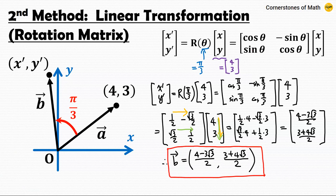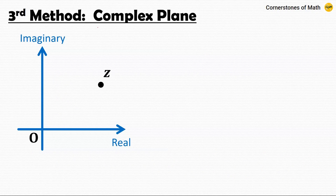It is worth emphasizing that this rotation matrix — [cosine theta, −sine theta; sine theta, cosine theta] — is just worth remembering. Now let me introduce the third method, and that method is to use complex numbers, especially the complex plane.